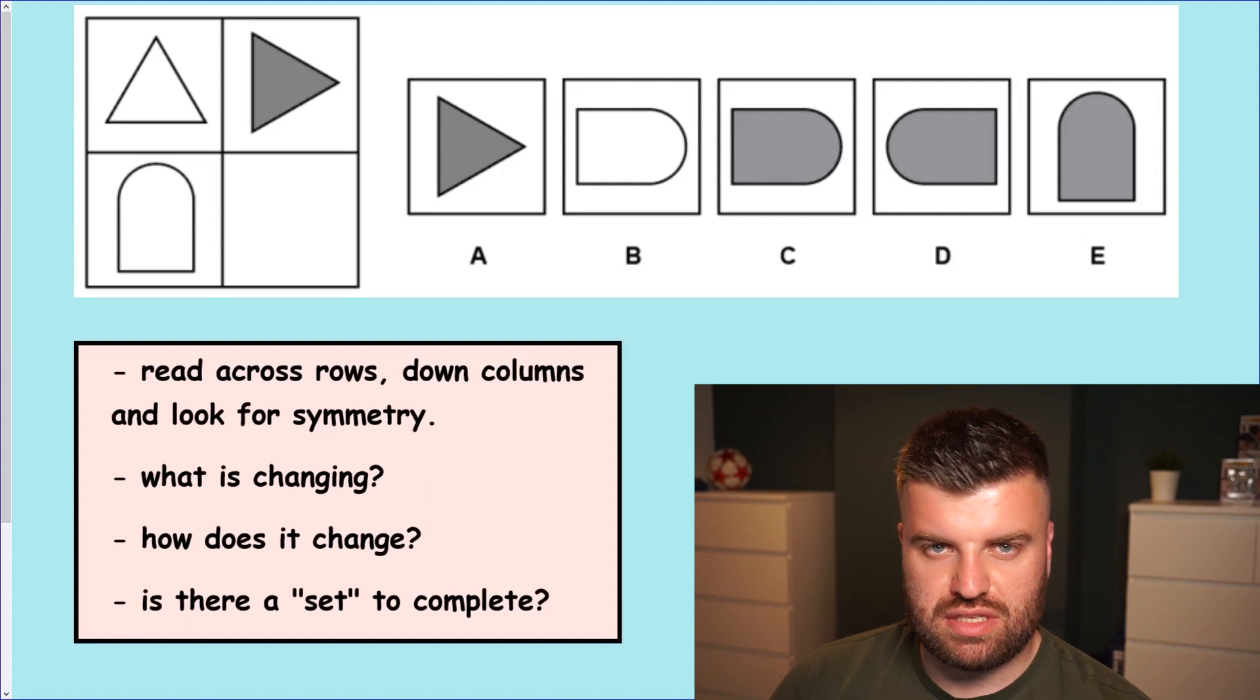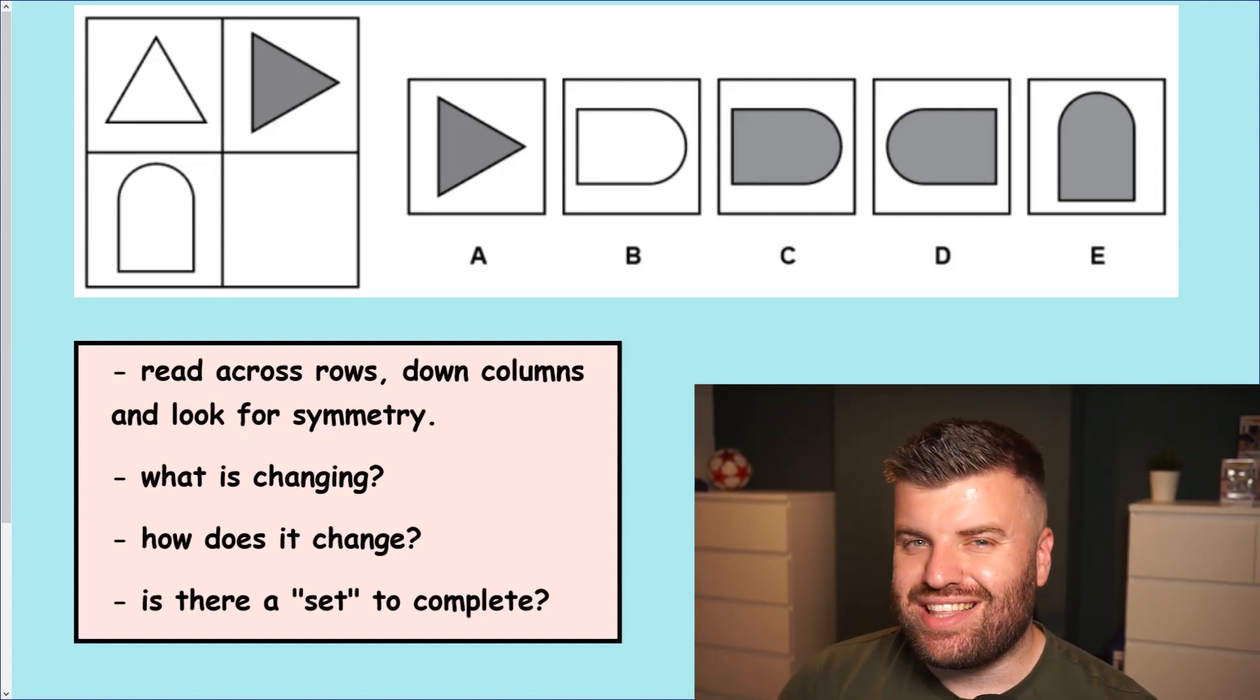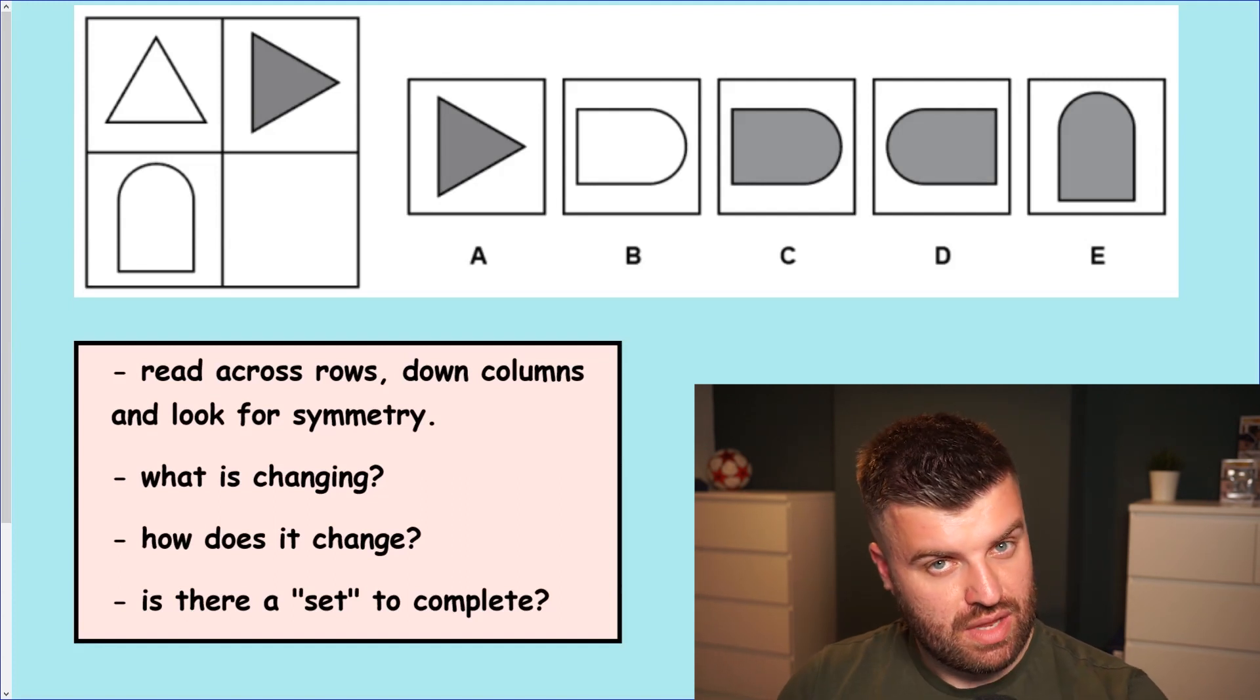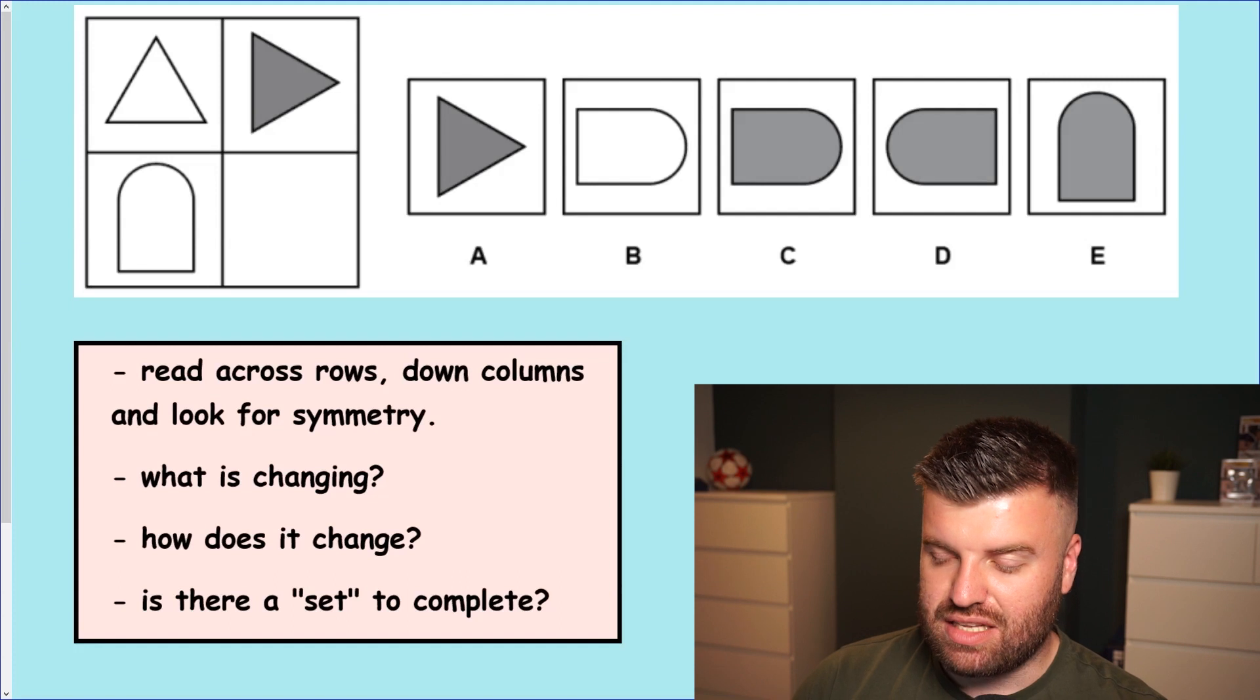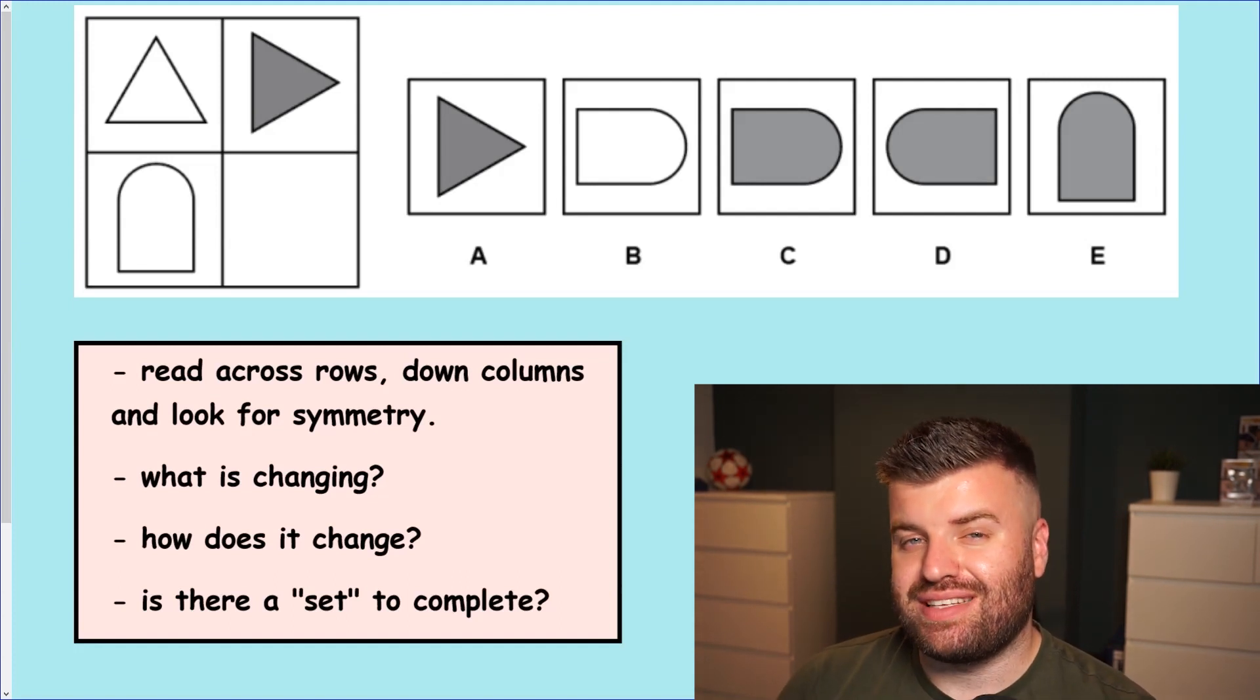So let's take a look. How can we solve these types of questions? Well the first thing I'll do is explain how it works. You're given a grid. It's either two by two or three by three but there is something in common. There's always one tile missing and it's our job to look at the five tile options on the right and decide which one best fits into the gap.